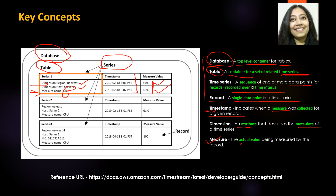For example, here you have two dimensions: host and region — region is US West and host is server one. For that, you are measuring CPU utilization, and this is the actual value of that CPU utilization. The measure is the actual value being measured by the record. So to summarize: you have your two dimensions (region and host), your measure name (CPU), the measured value, and the associated timestamp. I will create a separate deep-dive video, but hopefully this was clear and straightforward.